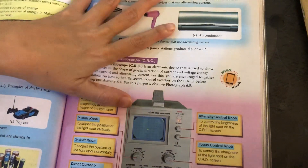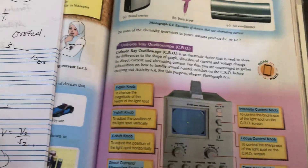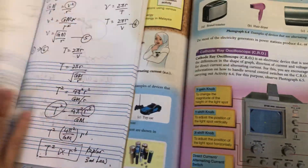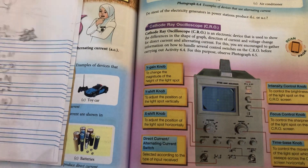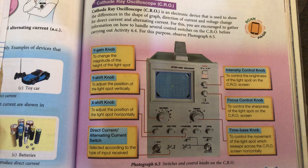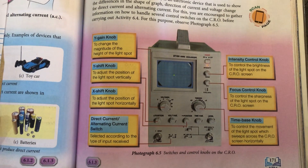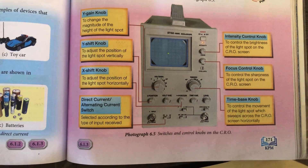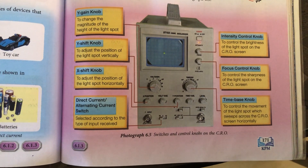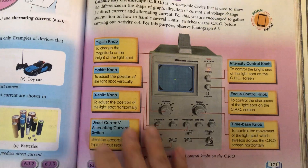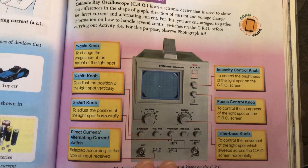Now we move on to the CRO — the cathode ray oscilloscope. It is a device that we use to determine or study the shape of the graph of alternating current, direct current, voltage, and so on. We have this in the lab, and when we meet later, I will show you and you can actually try it.